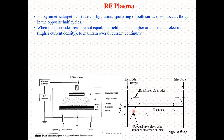When the electrode areas are not equal, the electric field must be higher at the smaller electrode. This means higher current density at the smaller electrode is required to maintain overall current continuity.